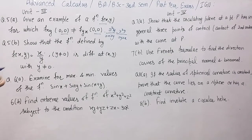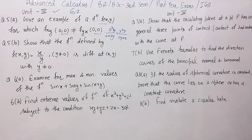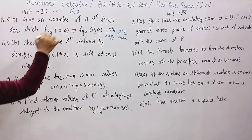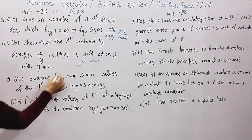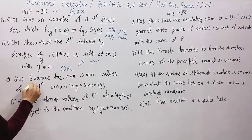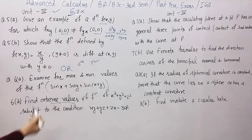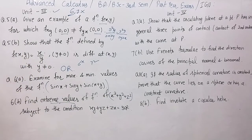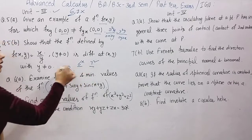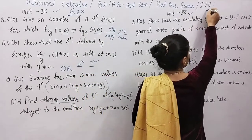Unit three starts from the sixth and seventh chapters — you have to cover six chapters on functions of two variables. If you have done chapter six, you can leave chapter seven, or skip chapter six because you will get another part: Examine for the maximum and minimum values of the function — find the extreme value from chapter seven.